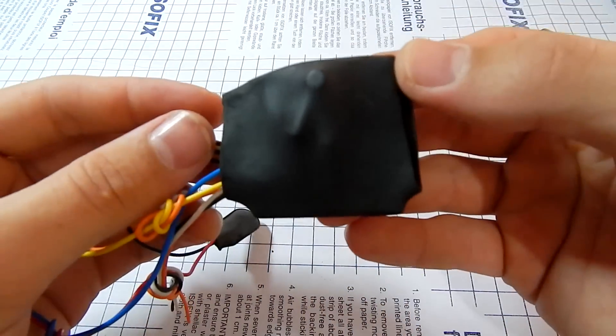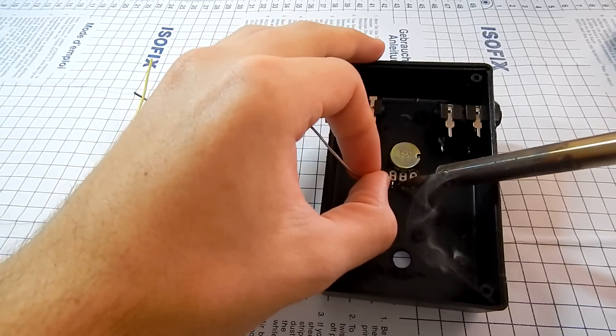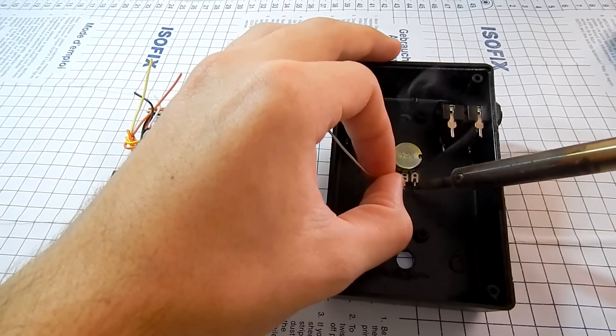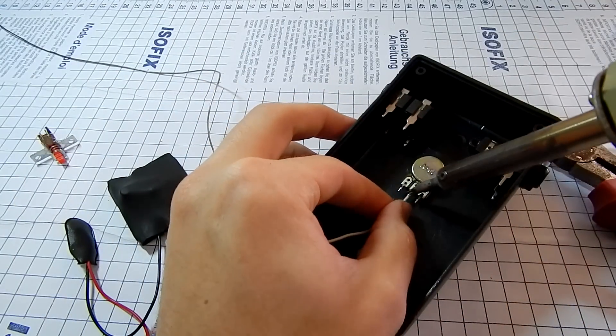With the board insulated, we'll tin all the component terminals to make soldering easier. Starting with the potentiometer, respecting the wire colors.